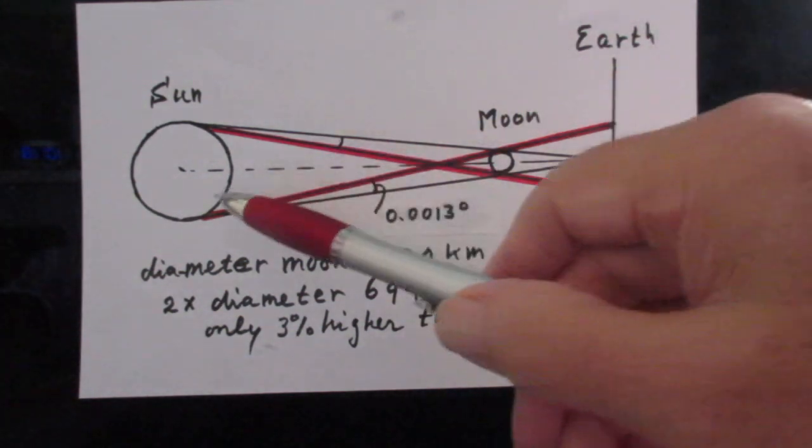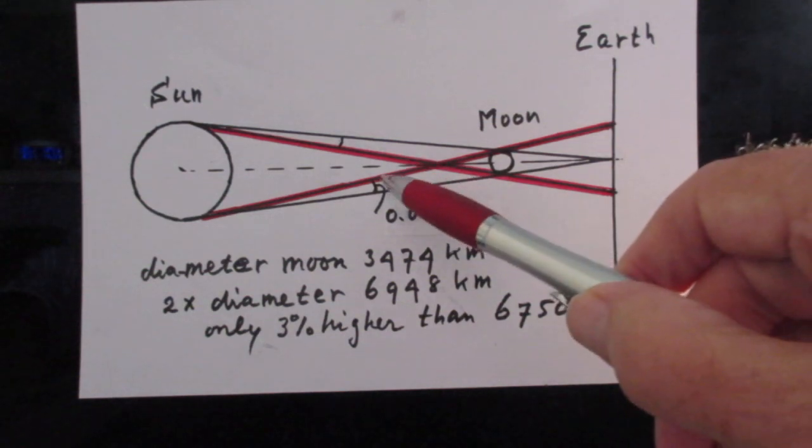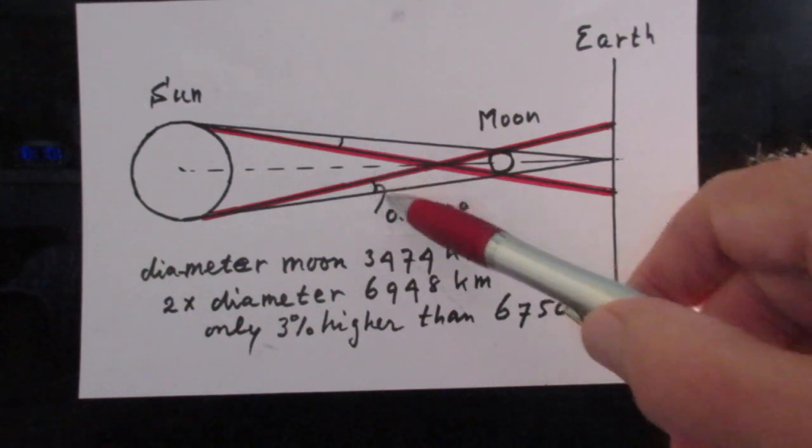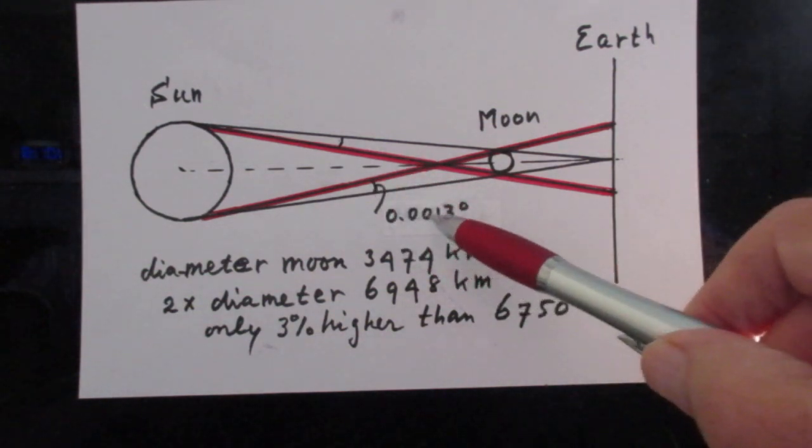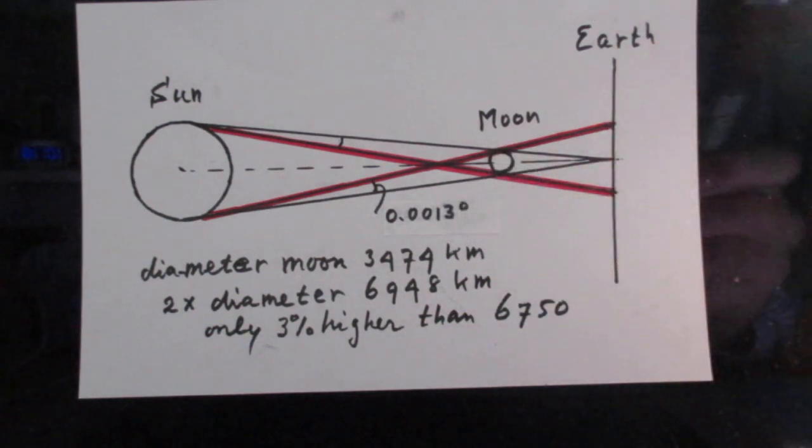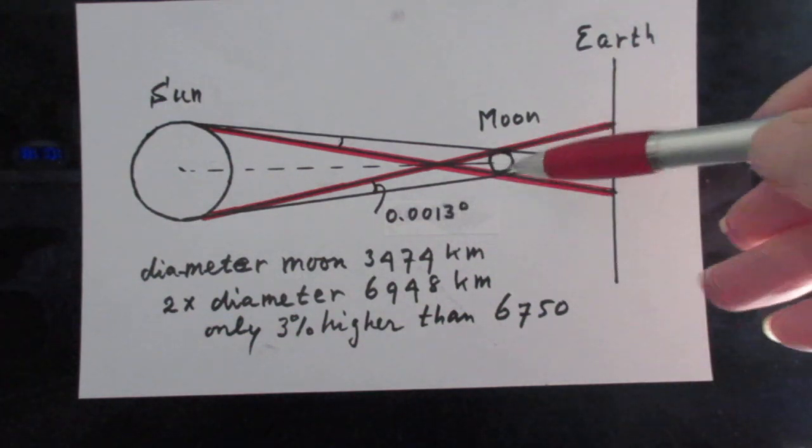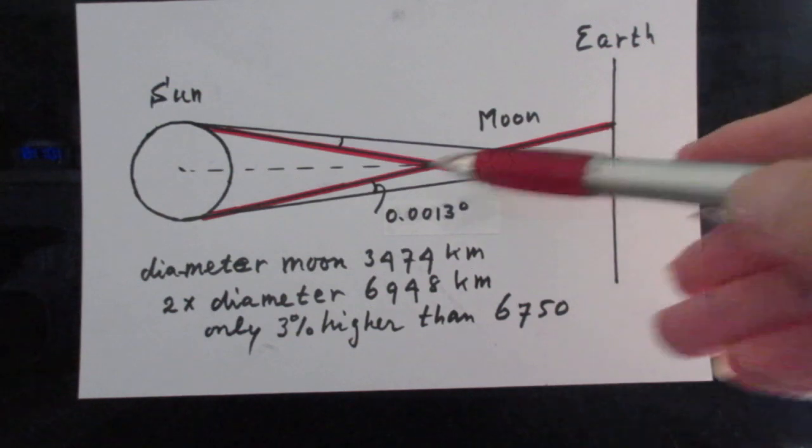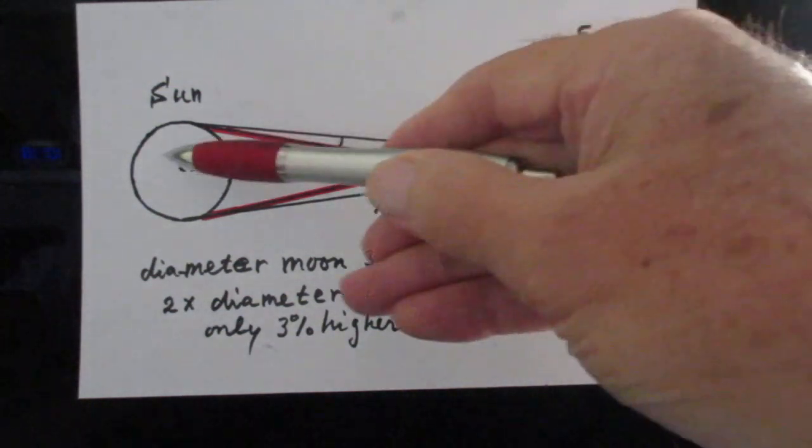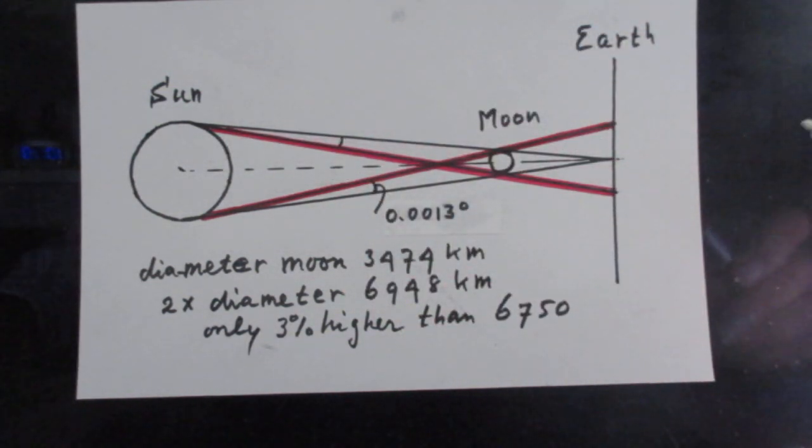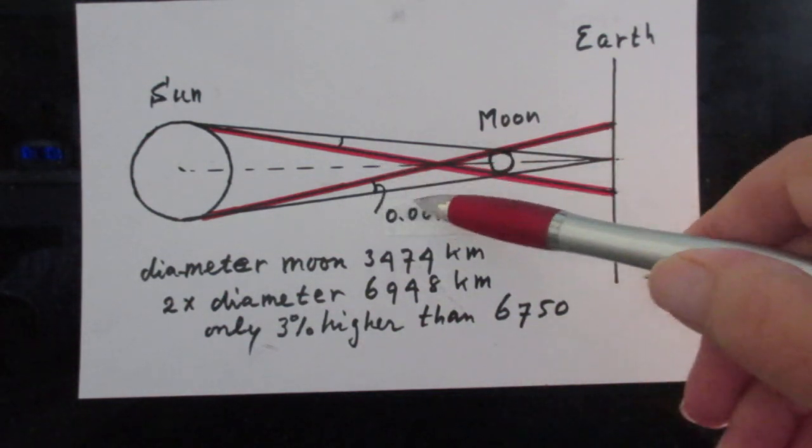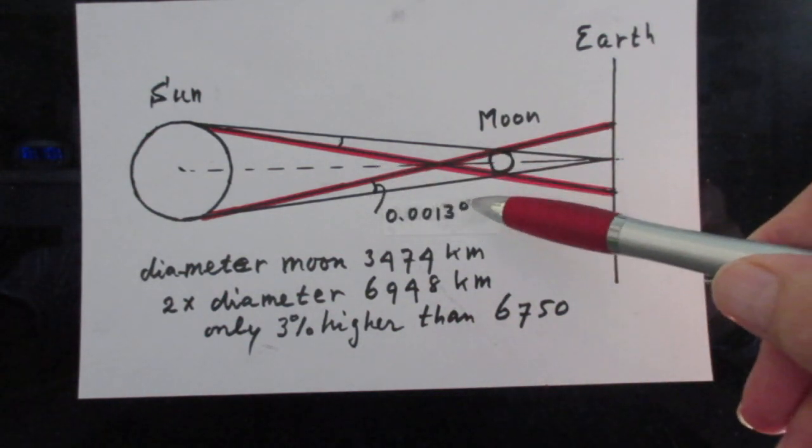Now look at this point of the Sun. This angle here is 0.0013 degrees. You can calculate that easily because you know the diameter of the Moon and you know this distance, roughly 152 million kilometers. So you get an angle of 0.0013 degrees.